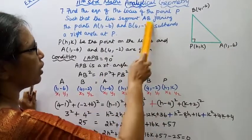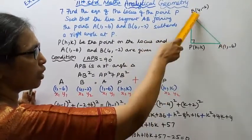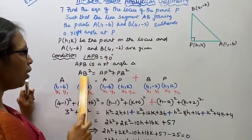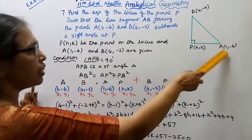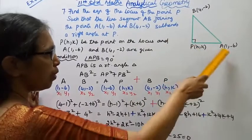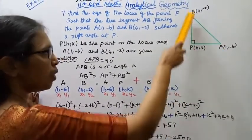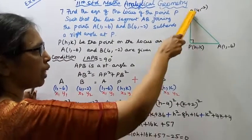Now we'll use the distance formula. AB means the distance between A and B, AP means the distance between A and P, and PB means the distance between P and B.